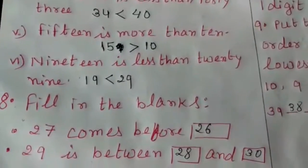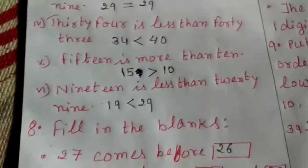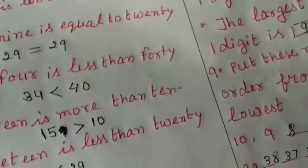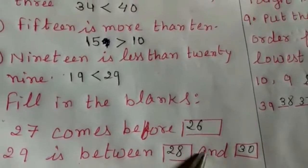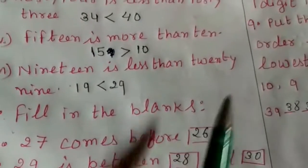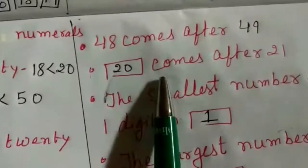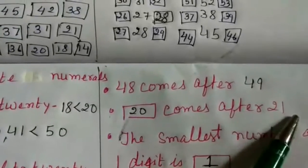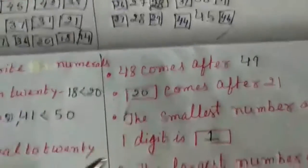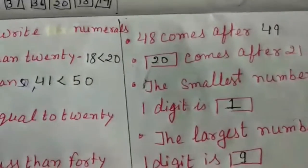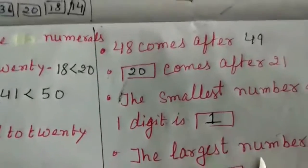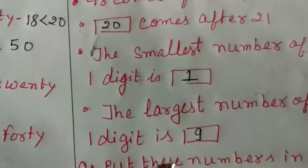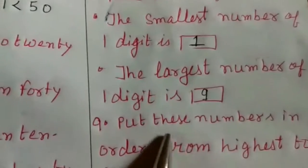Question number 8: fill in the blanks. 27 comes before — the number before 27 is 26. 29 is between 28 and 30. 48 comes before — the number after 48 is 49. 22 comes after 21. The smallest one-digit number is 1. The largest one-digit number is 9, because after 9 comes 10 which is a two-digit number.